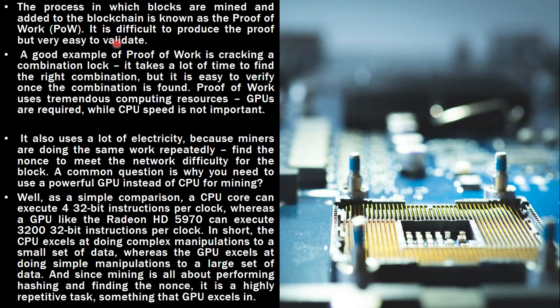It is difficult to produce the proof but very easy to validate. A good example of proof of work is cracking a combination lock. Let's say you have one suitcase and you forgot the combination. After trying various combinations, you find it. Once you've found the combination, you can share it with your family members — it's easy to verify. It takes a lot of time to find the right combination, but it is easy to verify once a combination is found.